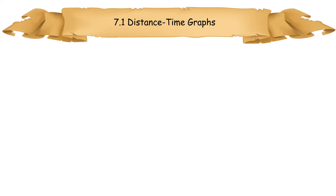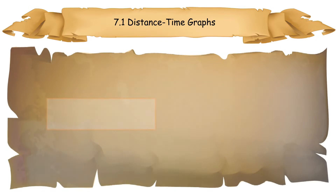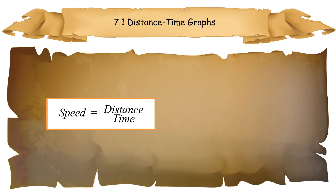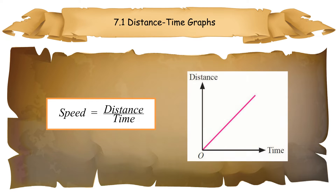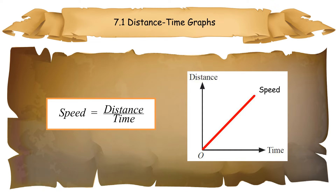7.1 Distance-Time Graphs. Speed is a rate which involves distance and time. The relationship between speed and time can be represented by a distance-time graph. The vertical axis represents distance, the horizontal axis represents time. The gradient of the graph represents the rate of change in distance with respect to time, i.e., speed.